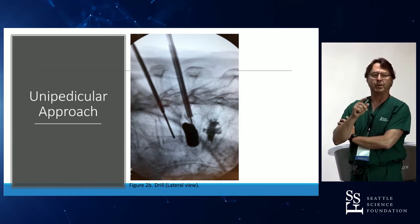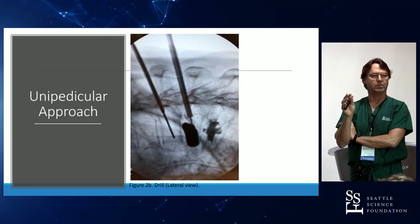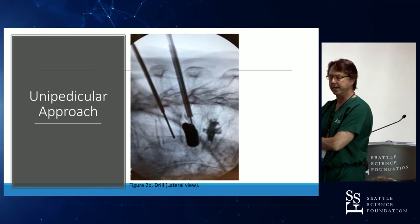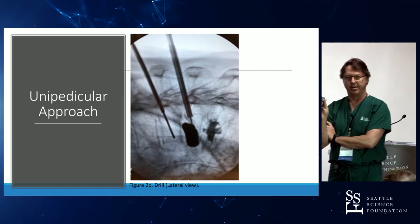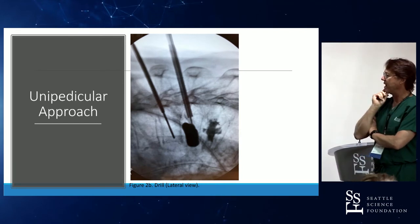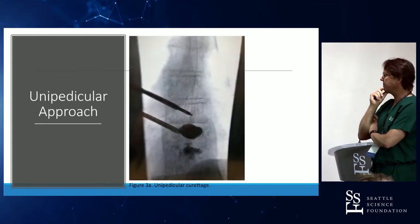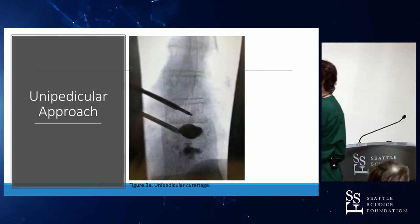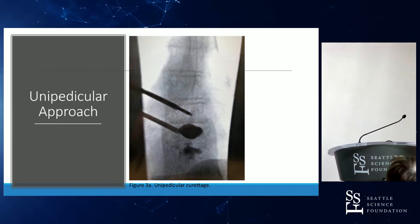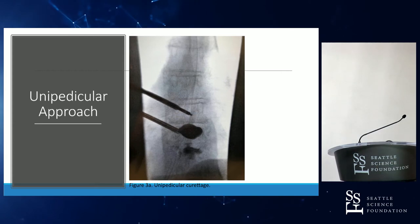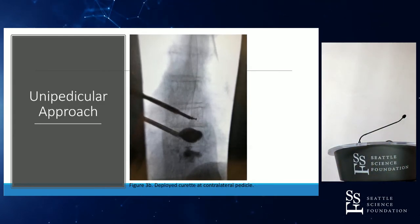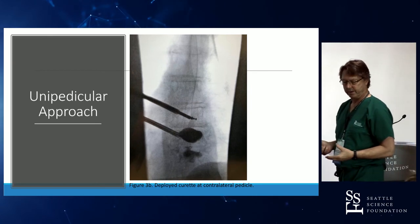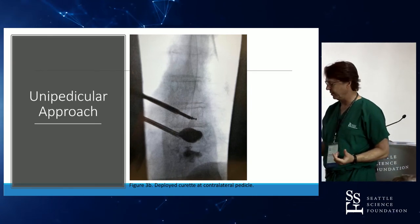What you want to do with cement augmentation is go from pedicle to pedicle. Now the curette is in the same position as the drill, centered on the vertebral body between the pedicles. The curette is deployed but hasn't yet reached the medial border of the pedicle.